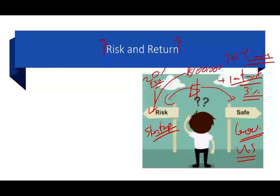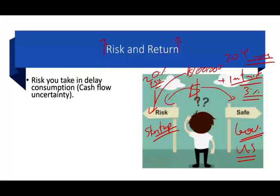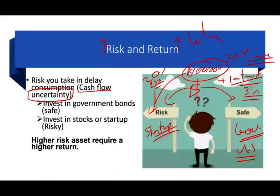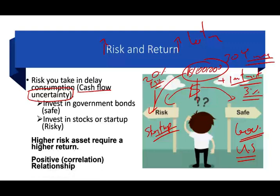When you make an investment — whether in Treasury bonds or a startup — all you're doing is delaying your consumption. You are not consuming the money now; you're investing it for later and making a commitment, getting a promise about cash flows in the future. That cash flow has uncertainty. With the U.S. government, there's practically no uncertainty. With a startup, you really don't know. So there's a positive relationship — a positive correlation between risk and return. Higher risk means the higher the required rate of return.